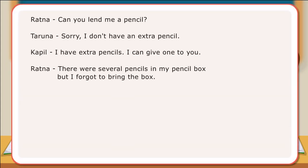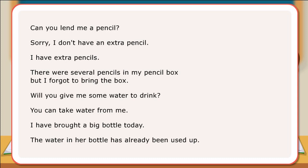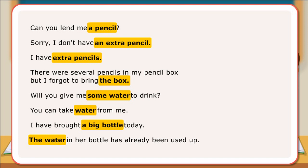In the dialogues, Ratna, Taruna, and Kapil have used articles with countable and uncountable nouns. Here are examples of sentences showing usage of articles with countable and uncountable nouns and also showing usage of nouns without articles. Can you lend me a pencil? I don't have an extra pencil. I have extra pencils. There were several pencils in my pencil box, but I forgot to bring the box. Will you give me some water to drink? You can take water from me. I have brought a big bottle today. The water in her bottle has already been used up.